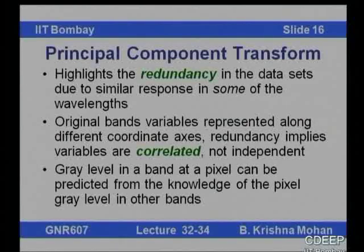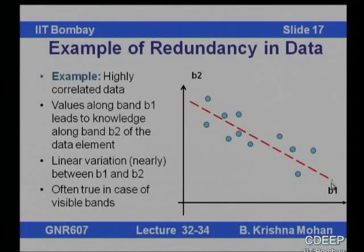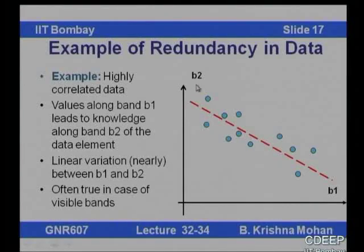If there is negative correlation, values in one band increase while in the other band they decrease. But there is a predictability among the data in different bands. Suppose you have two-dimensional data marked by two variables B1 and B2, with negative correlation — values in one band are low, in the other band they will be high and vice versa. There is a fair bit of predictability: if B1 is high, B2 is low, and if B2 is high, B1 will be low.